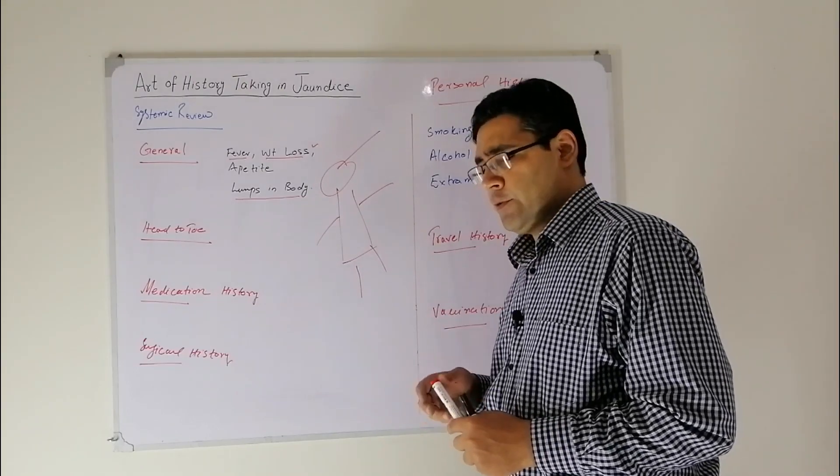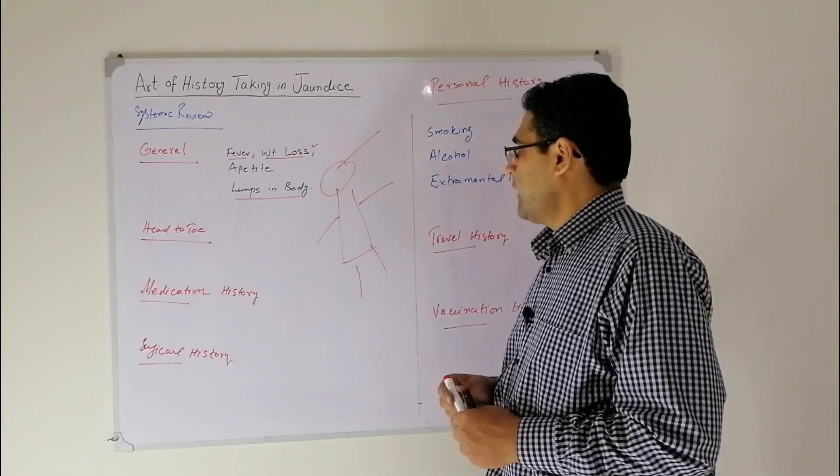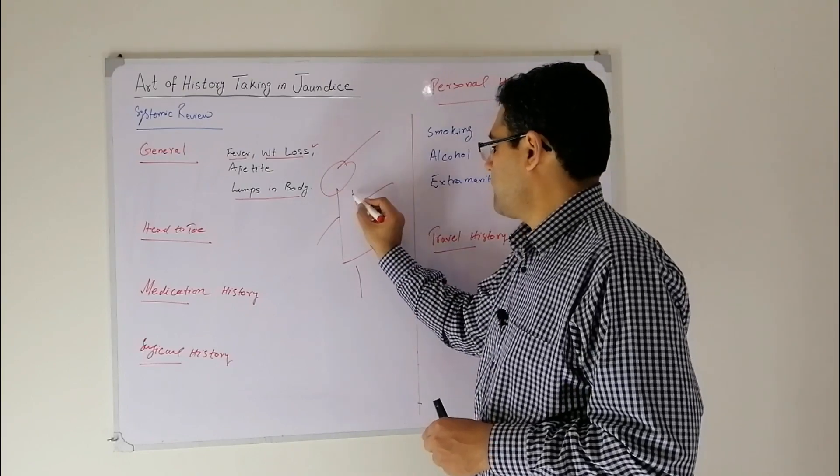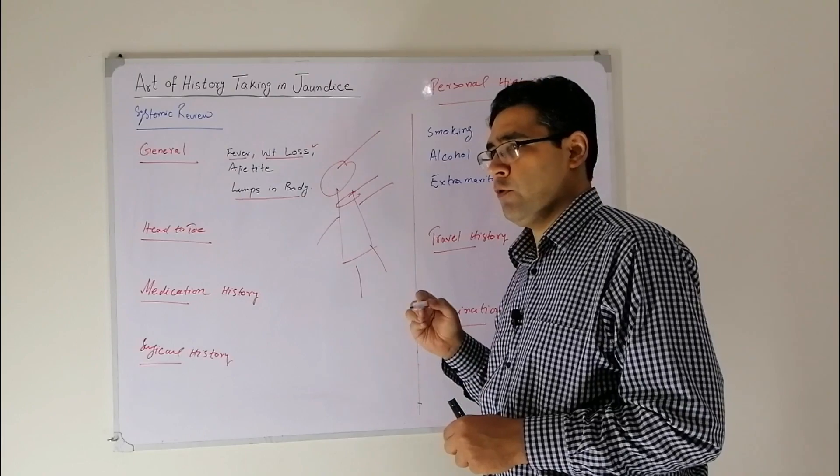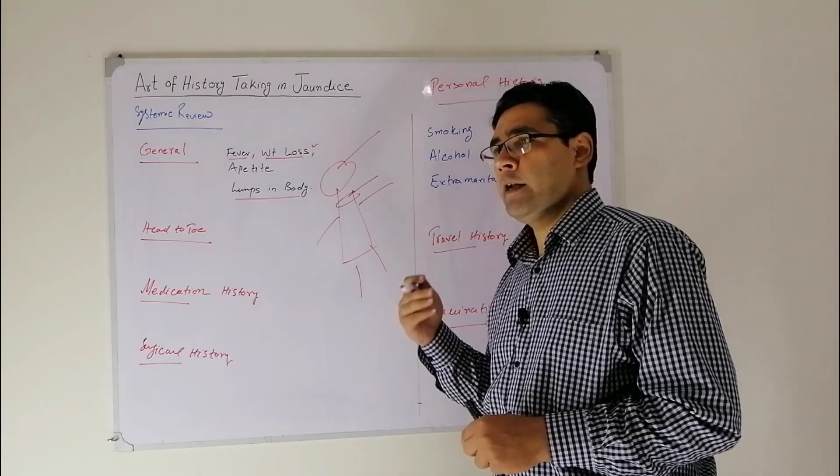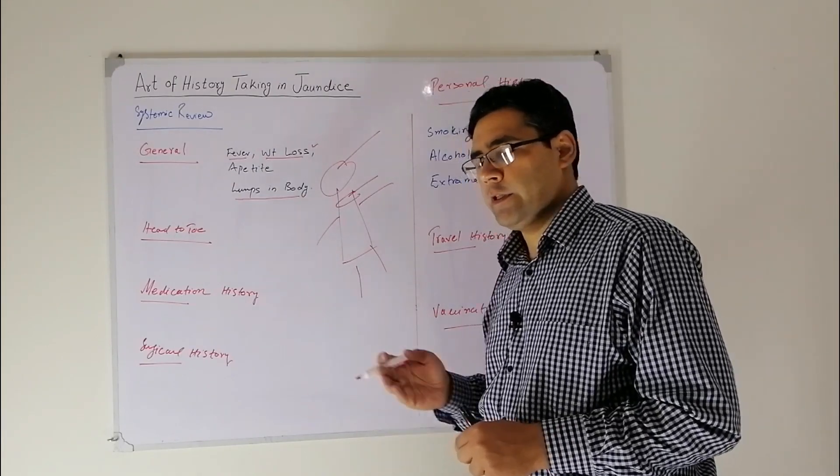Then comes the thyroid. Ask about any heat and cold intolerance, polyuria, and polydipsia. By this, you will rule out diabetes.